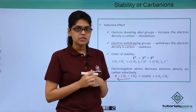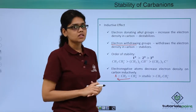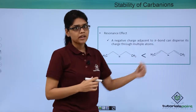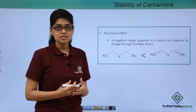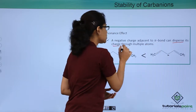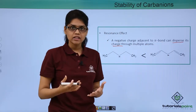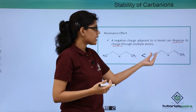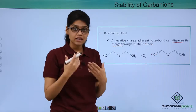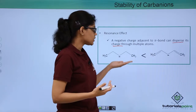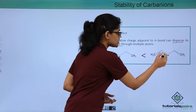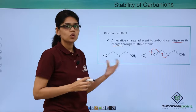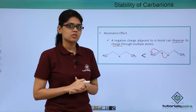The second electronic effect that stabilizes a carbanion is resonance. A negative charge adjacent to a pi bond stabilizes the carbanion by dispersing the negative charge through multiple atoms — just as dispersal of positive charge stabilizes carbocations. An adjacent pi bond to a negative charge helps stabilize it through this dispersal. For example, one compound where the negative charge is dispersed via an adjacent pi bond will be much more stable compared to a compound where no such effect is present.